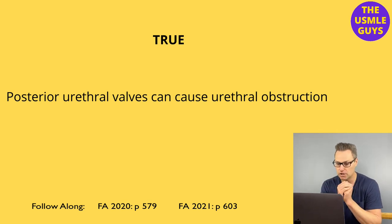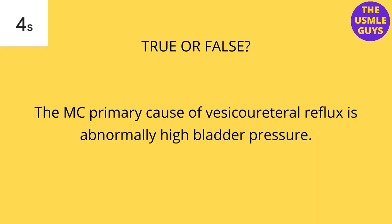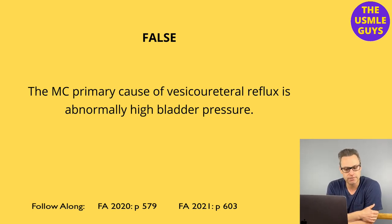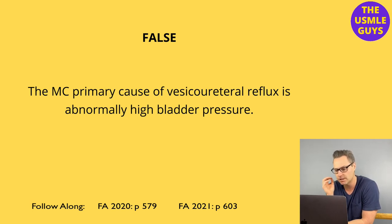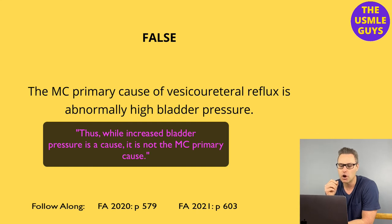Next question — this is false. The most common primary cause of vesicoureteral reflux is either due to an abnormal or insufficient insertion of the ureter within the vesicular wall, or it could be secondary to retrograde urine flow when there is a significant elevation in bladder pressure. Recurring UTIs are the big risk associated with this condition.